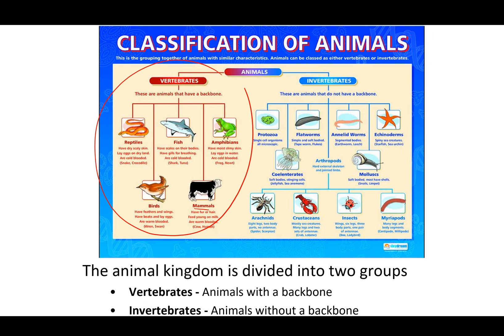Invertebrates are a much larger group and make up the majority of animal species on planet Earth. Starting with worms: flatworms have simple, soft, flat bodies — things like tapeworms and flukes, such as the liver fluke that lives inside animals' intestines. Roundworms have no segments — they're just a round tube. Annelids have a segmented body, split into different sections — earthworms and leeches are annelids.